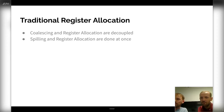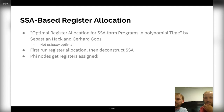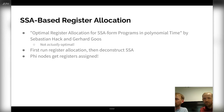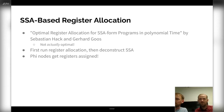If we look at SSA-based register allocation, the algorithm is described in the paper 'Optimal Register Allocation for SSA Form Programs in Polynomial Time' by Sebastian Hack and Gerhard Goos. One thing to note directly is that 'optimal' in this paper refers to the minimum number of registers used, and this also requires some assumptions which we will get back to later. It is not optimal in the broader sense we discussed earlier.